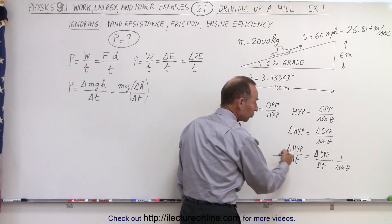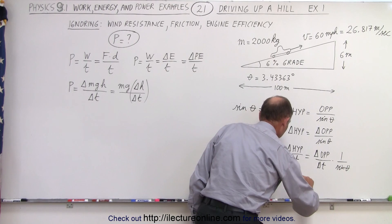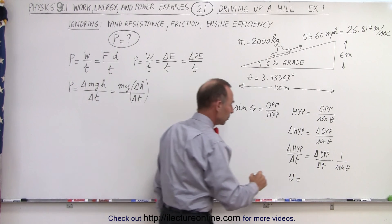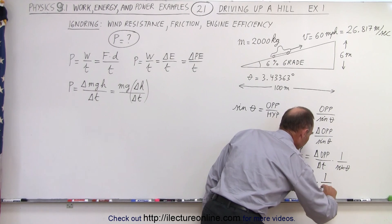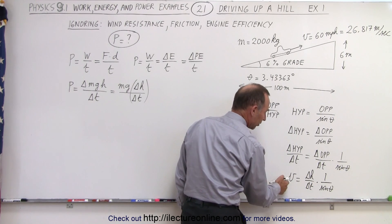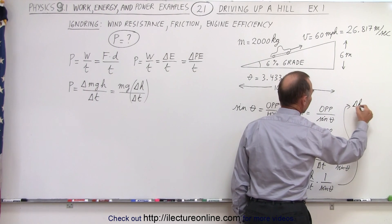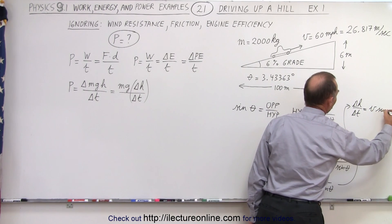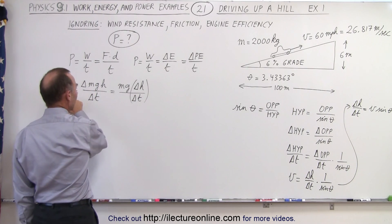The change in the hypotenuse over time is the speed — the velocity — of the car. And the change in the opposite side over delta t is delta h over delta t. So: delta h over delta t equals the velocity of the car times the sine of theta. That gives us the rate at which the car gains height.